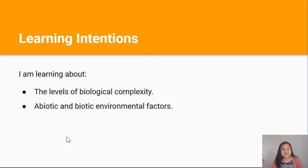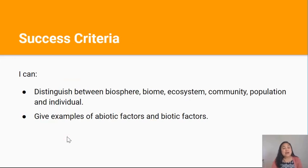In this lesson you're going to be learning about the levels of biological complexity and abiotic and biotic environmental factors. By the end of this lesson you should be able to distinguish between biosphere, biome, ecosystem, community, population, and individual. And you should be able to give examples of abiotic factors and biotic factors.